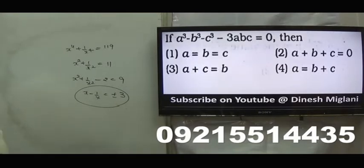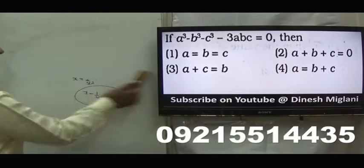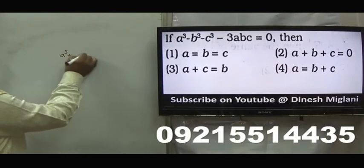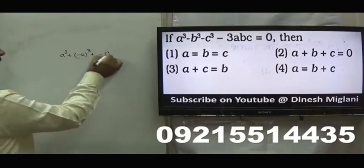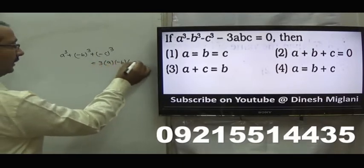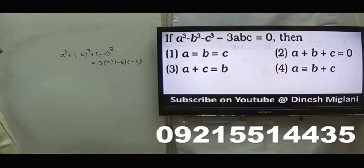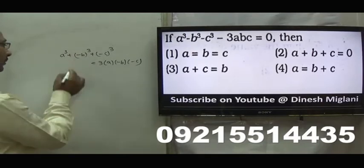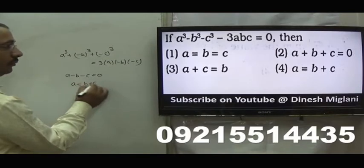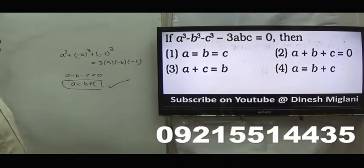It is given that a cube minus b cube minus c cube minus 3abc equal to 0. From here, a cube plus minus b whole cube plus minus c whole cube equal to 3 of a into minus b minus c. We know that a cube plus b cube plus c cube equal to 3abc only when the sum is equal to 0, meaning a minus b minus c must be 0. Hence a equal to b plus c. Fourth is my answer: this would be true only when a equal to b plus c.